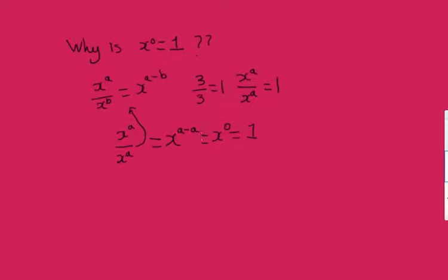x to the zero must equal one because x to the a over x to the a is two same numbers, we've just said that's equal to one. So x to the zero must also equal one. It's not intuitive - you would think x to the zero equals zero because when you think what does x to the zero actually mean?